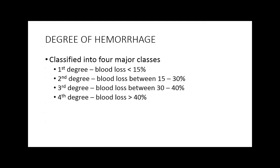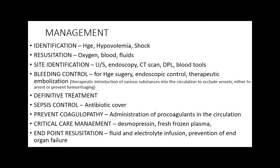When we talk about the degree of hemorrhage, there are 1st, 2nd, 3rd, and 4th degrees. Blood loss less than 15% is not very dangerous. 15 to 30% blood loss means transfusion may not be necessary — fluid replacement is often enough. 30 to 40% requires fluid plus blood replacement. More than 40% blood loss ultimately leads to hypovolemic shock, which is a life-threatening situation requiring immediate blood replacement.